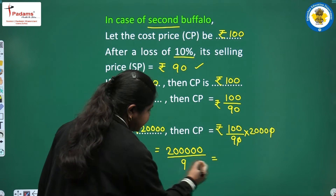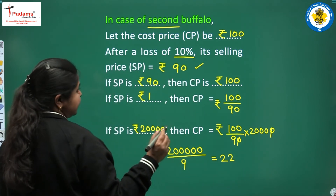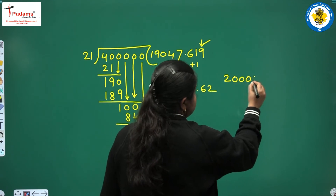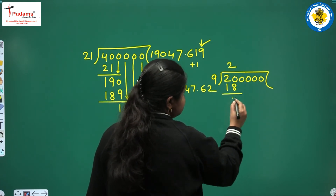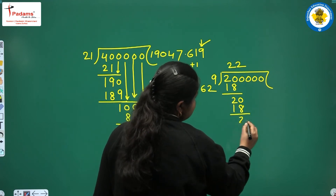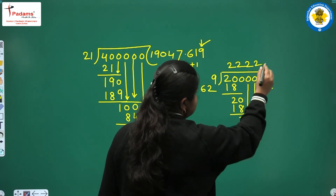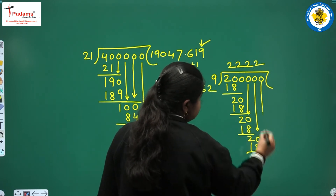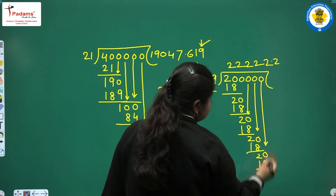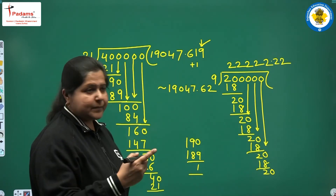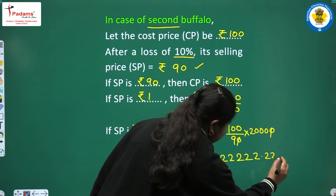Using the unitary method: if selling price is Rs. 1, cost price is Rs. 100 upon 90. And if selling price is Rs. 20,000, cost price will be Rs. 100 upon 90 into 20,000. Cancelling a zero, we get 2,00,000 upon 9. Dividing 2,00,000 by 9: 9 goes into 18 twice, remainder 2, and this pattern repeats giving 22,222.22 in rupees. This is the cost price of the second buffalo.